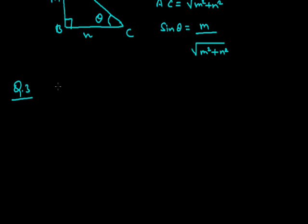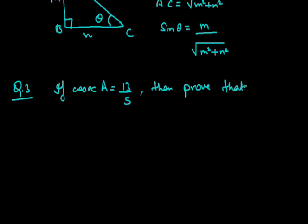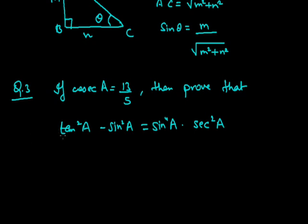Few more examples we will see. The question is: if cosec A = 13/5, then prove that tan²A − sin²A = sin⁴A · sec²A. In this it is given that cosec A = 13/5, and accordingly we need to prove that the LHS, tan²A − sin²A, equals the RHS, sin⁴A · sec²A. First we will make the right angle triangle.